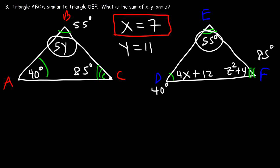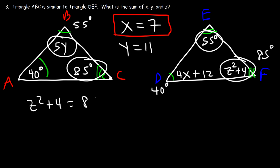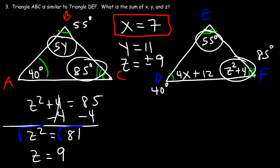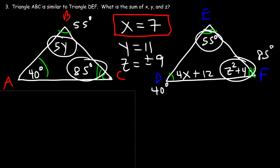For Z: z squared plus 4 equals 85. Subtracting 4 from both sides gives z squared equals 81. Taking the square root of both sides, z equals plus or minus 9. Z can be negative 9 because negative 9 squared is still 81, which gives us positive 85 degrees.